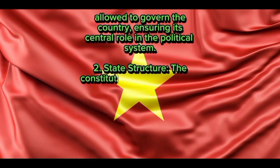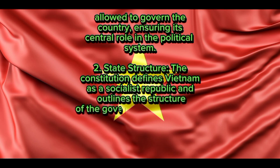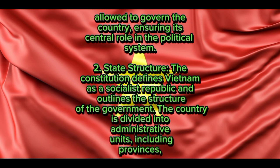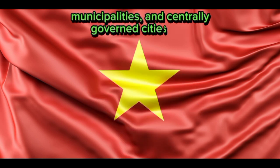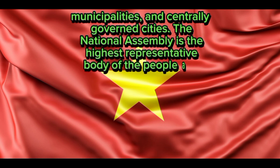State structure: The Constitution defines Vietnam as a socialist republic and outlines the structure of the government. The country is divided into administrative units, including provinces, municipalities, and centrally governed cities. The National Assembly is the highest representative body of the people and exercises legislative power.